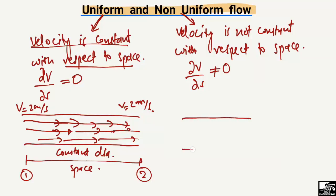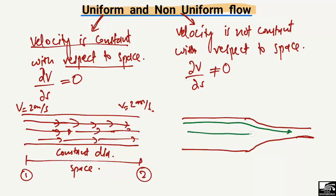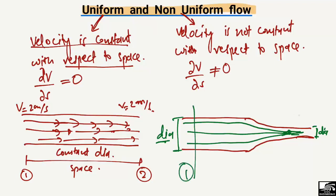We see this type of flow in pipes where the diameter changes. If water is coming through this pipe, the diameter changes along its length — at one point the diameter is higher, while at another point the diameter is lower. Due to the change in diameter, the velocity at the first point and the second point will differ across that space in the direction of flow.